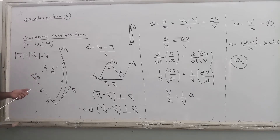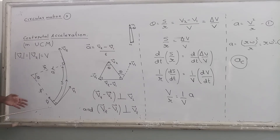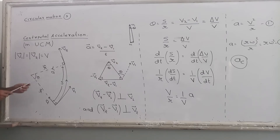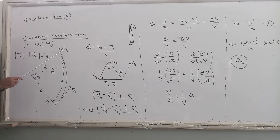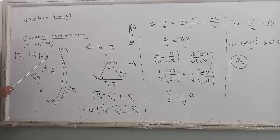Today we will find the direction and magnitude of that acceleration. Here I have taken this example: the body is moving from this point to this point. Here the velocity is v1, here the velocity is v2. The velocities are different but the speeds are the same — that means the magnitude of v1 and magnitude of v2 are both equal to v.